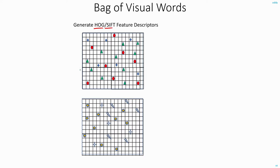You first divide the image into a grid, let's say 20 by 20 or 30 by 30 grid. And in each block, you extract the HOG or SIFT features. Now let's say for this image, these are the features that you managed to extract: plus symbols, circles and triangles.